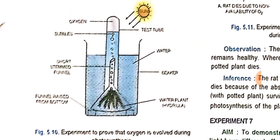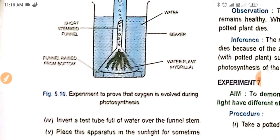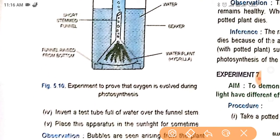You can see in this figure an experiment that proves that oxygen is evolved during the process of photosynthesis. It is a test tube and water is filled in a beaker. This is the hydrilla plant, and a short funnel is placed just above the hydrilla plant.